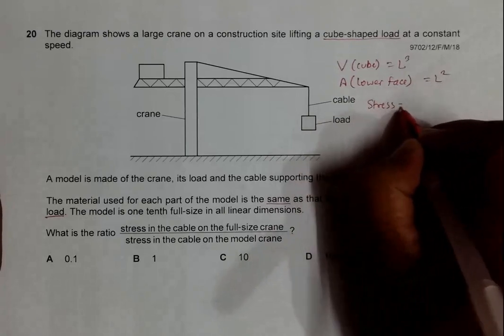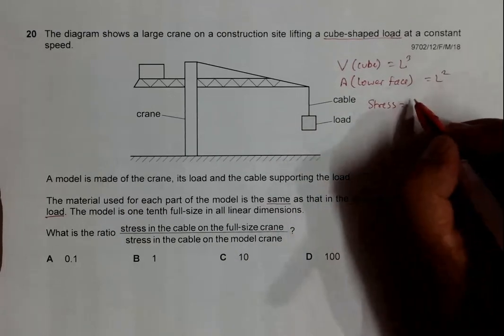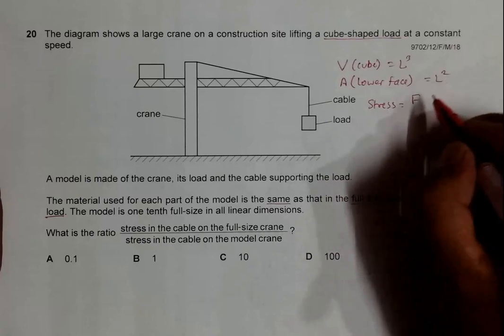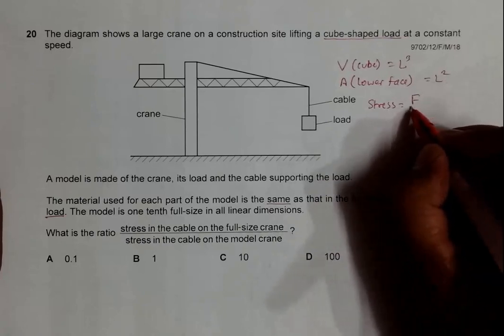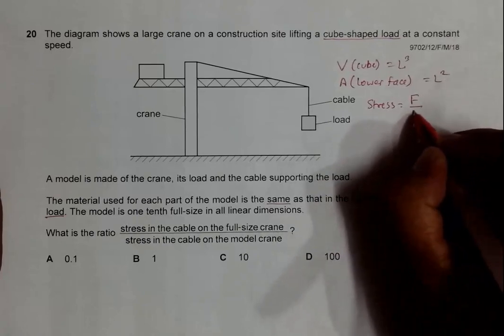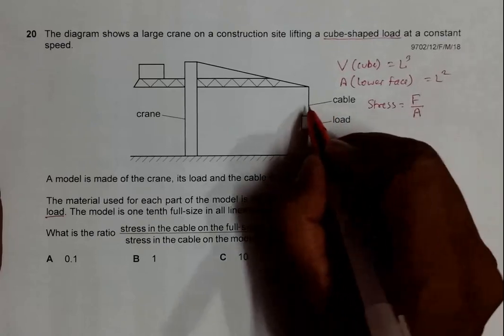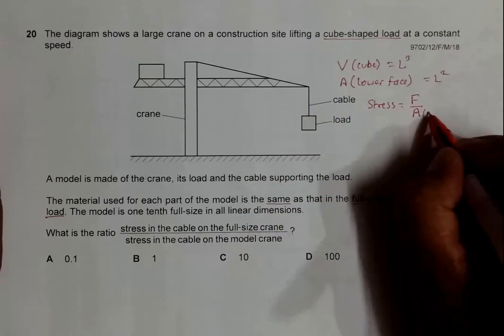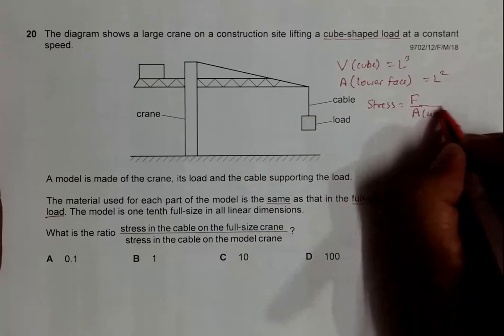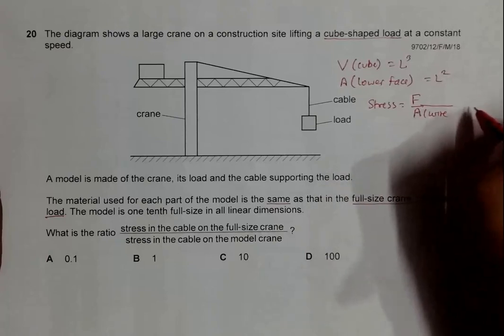This is the area of the wire. The force will be equal to the mass of the load times g divided by the cross-sectional area of the wire.